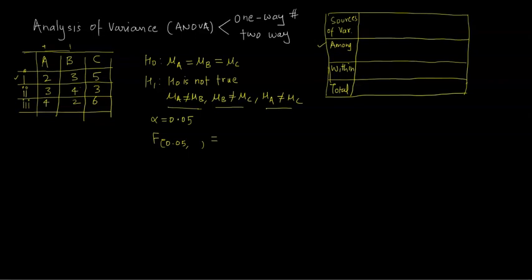There is also a 'within' fluctuation, which means the same drug is given to three different people, and that captures the variation within a group. 'Within' is called experimental error, and 'amongst' is called treatment effect. So variation is observed in two directions: through the rows, which is 'amongst' or treatment effect, and within a particular group, which is the experimental error.